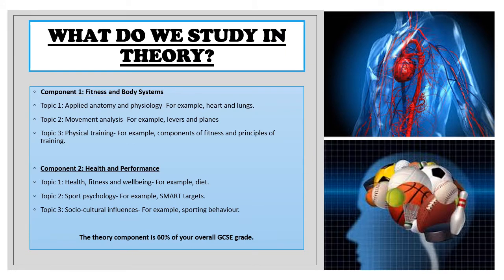Now let's have a look at what we study in theory. Theory is split into two components. Component 1 is Fitness and Body Systems. Topic 1 is applied anatomy, Topic 2 is movement analysis, and Topic 3 is physical training. Component 2 is Health and Performance. Topic 1 is health, fitness and wellbeing, Topic 2 is sports psychology, and Topic 3 is influences.